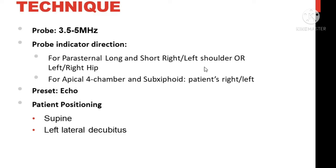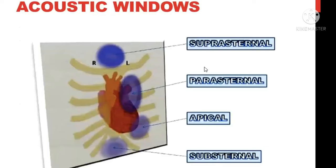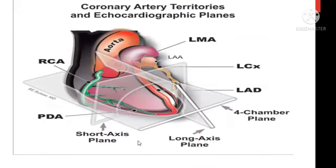The preferred patient position is supine, but sometimes you need to move the patient to the left lateral position to make the heart closer to the chest wall. Additional windows include the suprasternal notch — above the clavicle — which is mostly used to look from a higher position. The main echo windows are parasternal long axis, parasternal short axis, apical, and sub-xiphoid or sub-sternal.